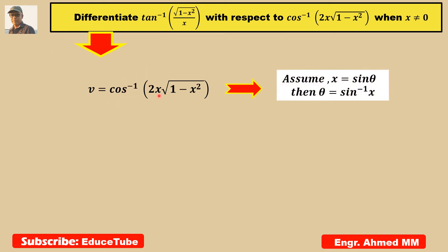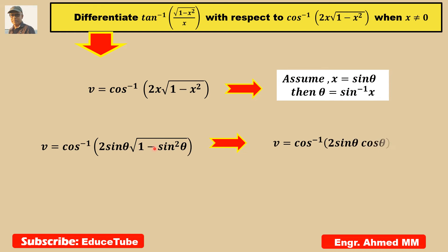Now we will move to the second part. Here v equals cos inverse of 2x times square root of 1 minus x squared. Same way, assuming x equal to sin theta — as I mentioned, I could assume cos theta and the result will be the same. So replacing x with sin theta, we get 1 minus sin squared theta equals cos squared theta, doing the square root gives cos theta. Using the formula sin 2 theta equal to 2 sin theta cos theta, our result comes as cos inverse of sin 2 theta.